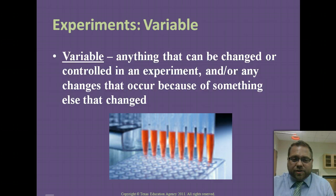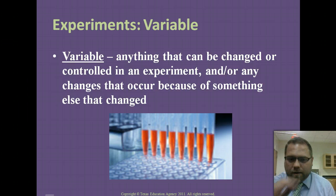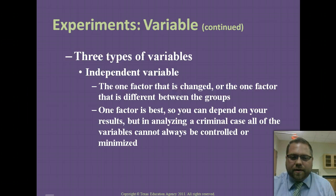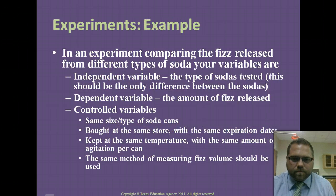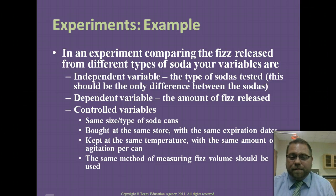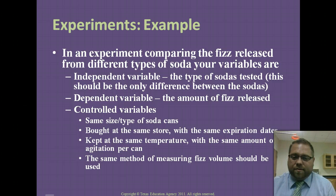Variables are anything that can be changed, controlled, or any changes that occur because something else changes. There are three types: independent, dependent, and controlled. For example, in an experiment comparing the fizz released from different types of soda, the independent variable is the types of sodas tested, the dependent variable is the amount of fizz released, and the controlled variables would be the size and type of cans, where you got them, how old they are, and things like that.